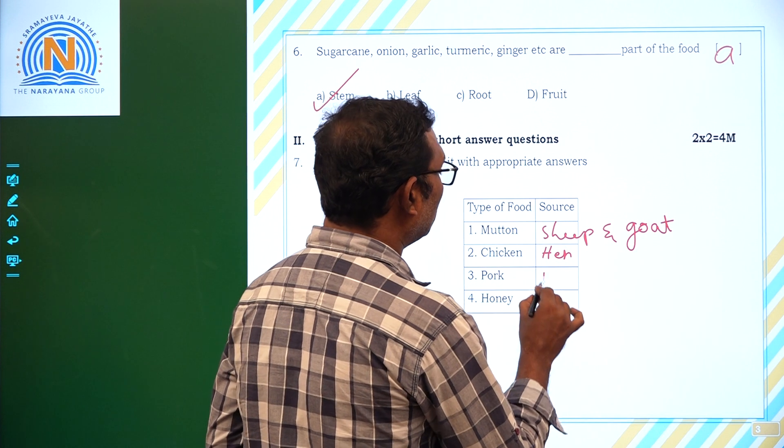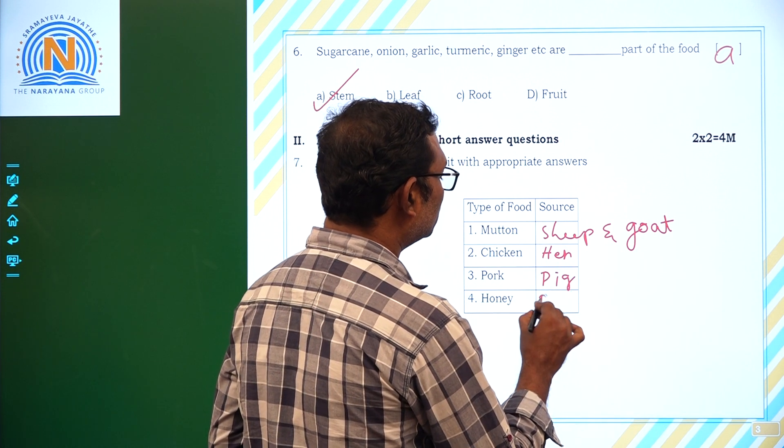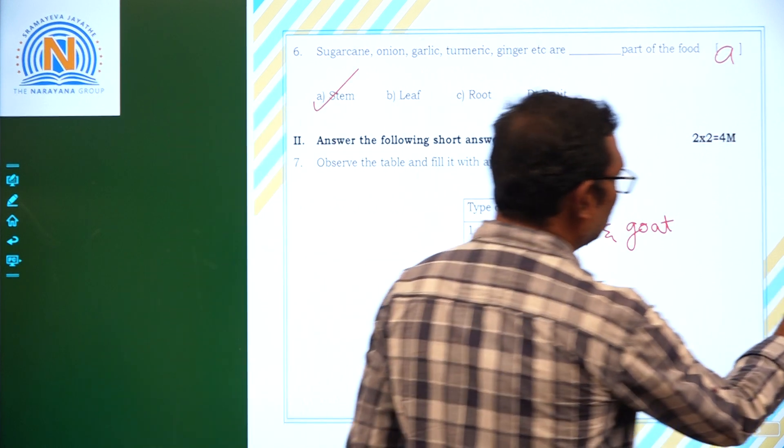Chicken we get from hen. And pork we get from pig only. Yes. Honey we get from bees, honey bees. Now next question.